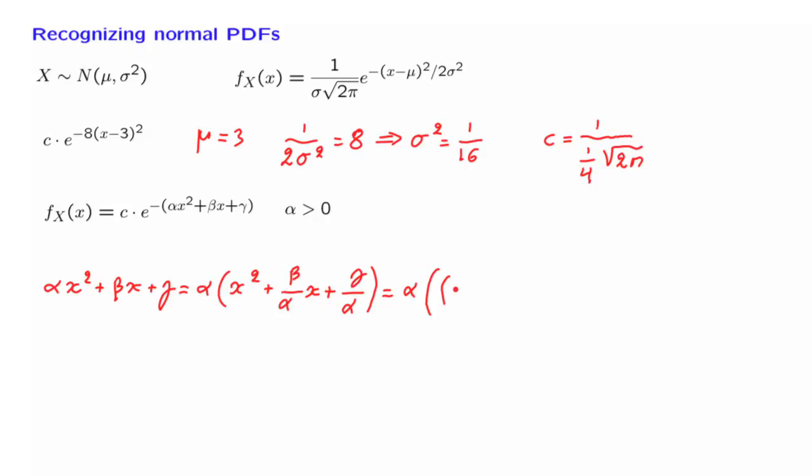That is, we write this term here in the form x plus something squared. And then we may need some additional terms. What should that something be? We would like that something be such that when we expand this quadratic, we get this term and that term.